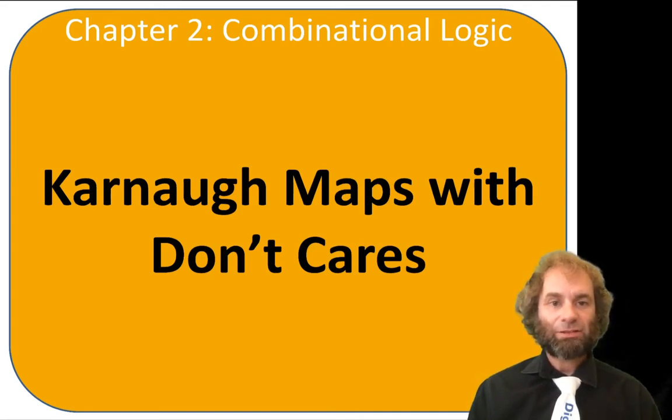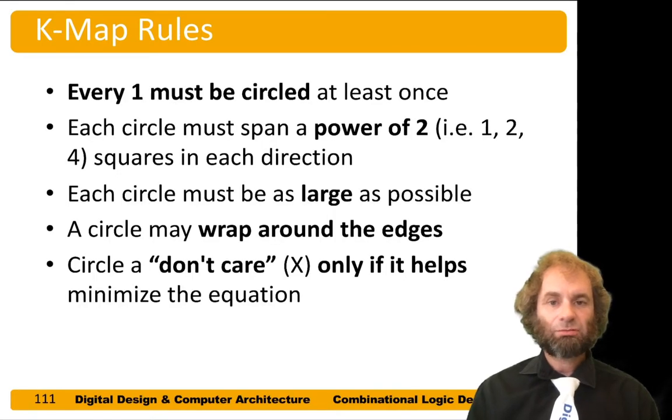Hello. The topic of this video is Karnaugh maps with don't cares. Recall that sometimes we can describe a logic function with a truth table that has don't cares - in other words, rows where the answer could be either zero or one, we don't care.